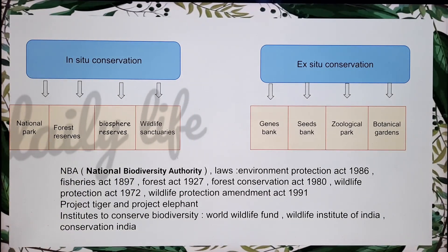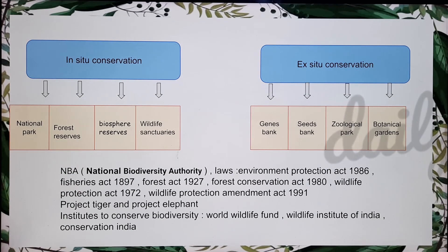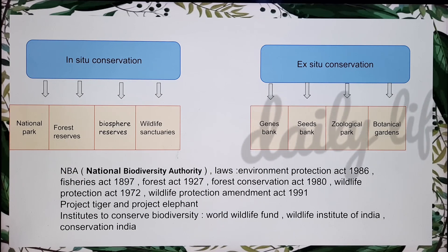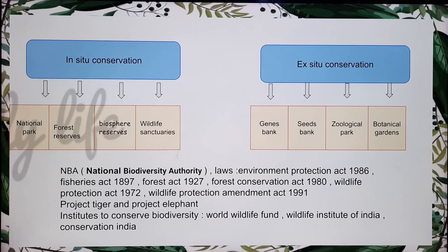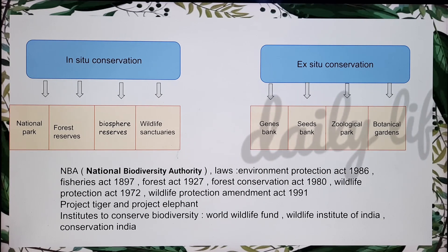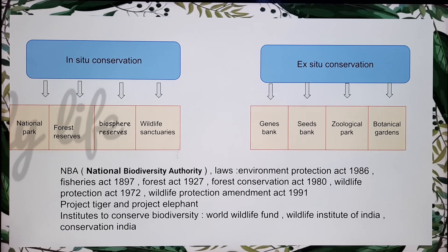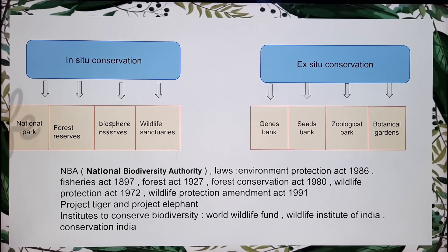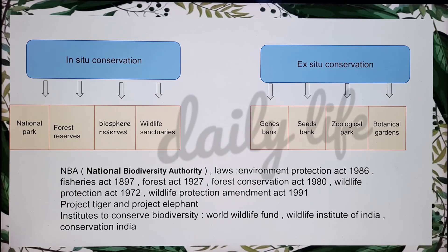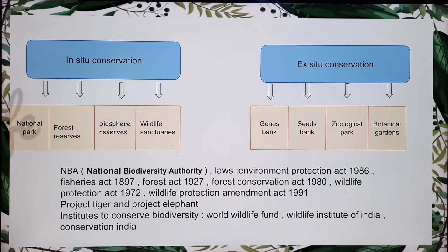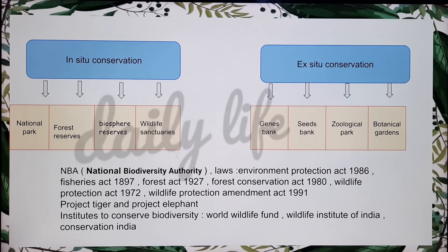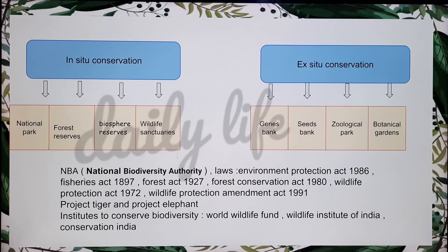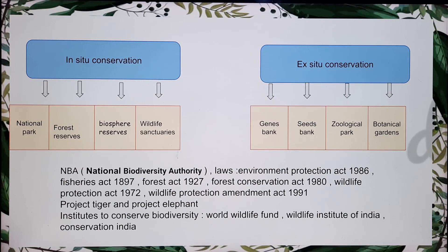We are going to see what kinds of organizations work under in-situ conservation and ex-situ conservation. For in-situ conservation there are: national parks, forest reserves, biosphere reserves, and wildlife sanctuaries. In national parks, no one except animals is allowed — animals are highly protected from human activities. In forest reserves, harvesting of herbs, cutting down trees, nothing is allowed; it's totally for preserving vegetation, habitat and biodiversity.